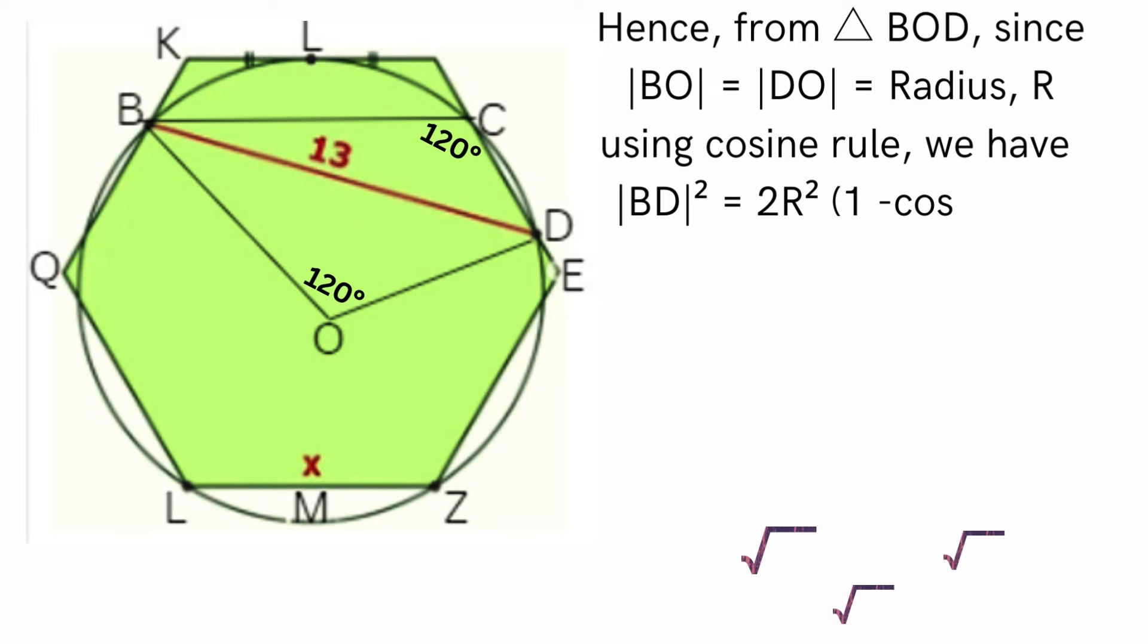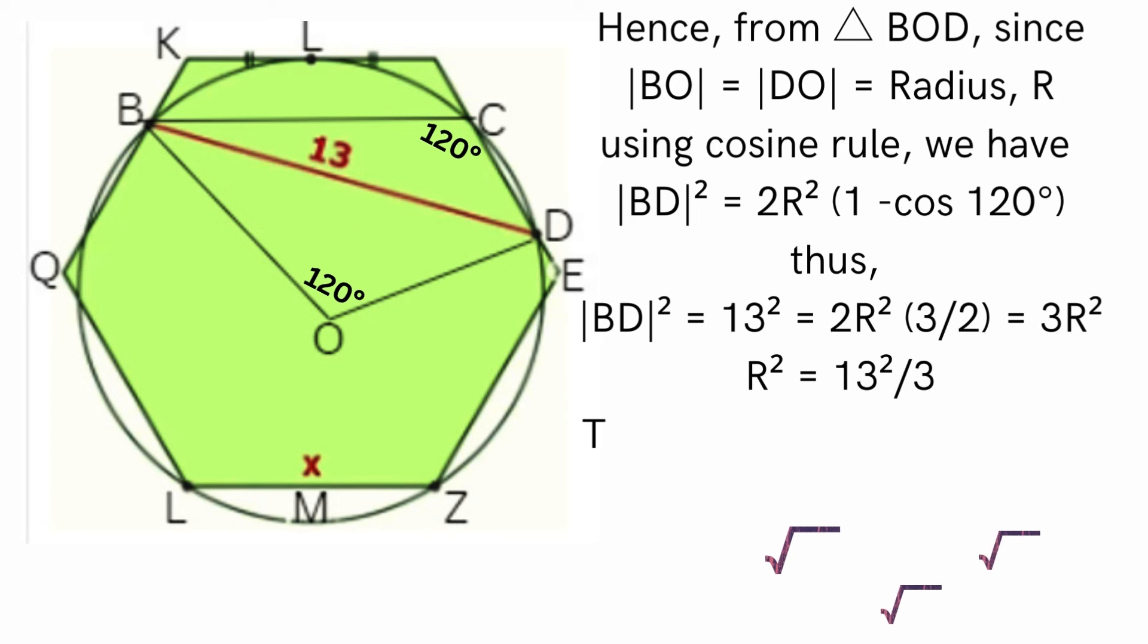Solving for R squared: R squared equals 13 squared divided by 3. Take the square root of both sides of the equation. Therefore, R equals the product of 13 and square root of 3 all divided by 3.